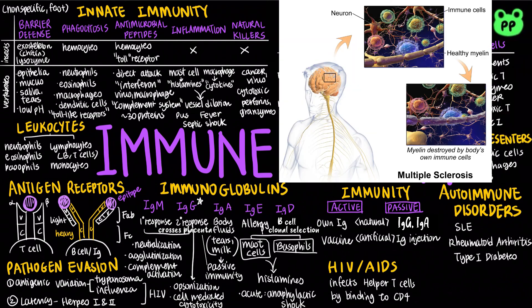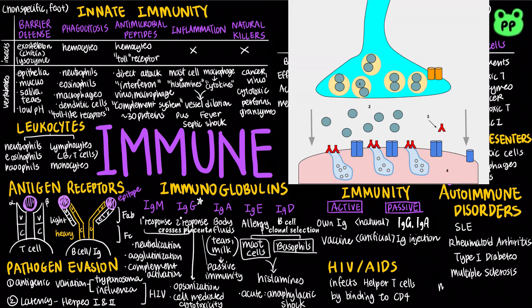During multiple sclerosis, T cells infiltrate the central nervous system, destroying the myelin sheath and leading to muscle paralysis. Myasthenia gravis results from antibodies blocking or destroying nicotinic acetylcholine receptors at the neuromuscular junction, leading to varying degrees of skeletal muscle weakness.